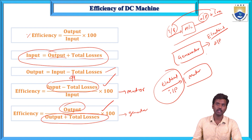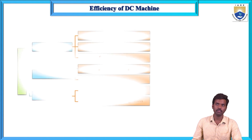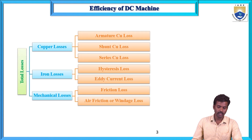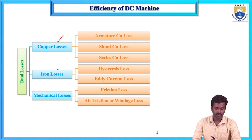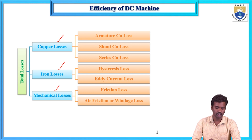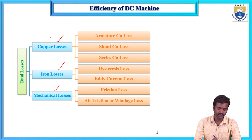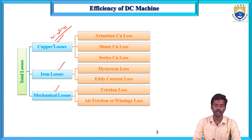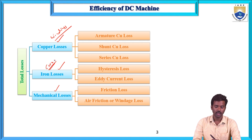Now, what are the losses? Losses are classified into three categories: copper losses, iron losses, and mechanical losses. Copper losses are also called winding losses. Iron losses are also called core losses.